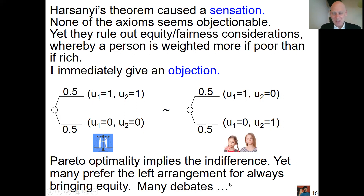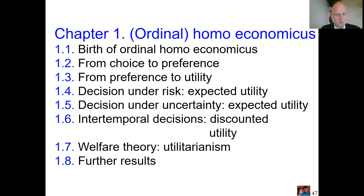The debate continued further, and surely it is a miraculous theorem: how can something as unobjectionable as Pareto optimality throw equity considerations out the window? That is always a bit mysterious. That was Harsanyi's theorem — it has been central to utilitarianism discussions, and many people think that welfare evaluation should reckon with equity. Many models exist to address this, but for this course we focus on this foundational theorem that sparked many debates.